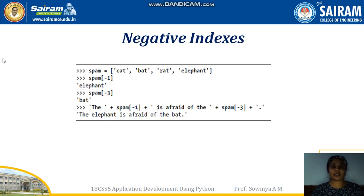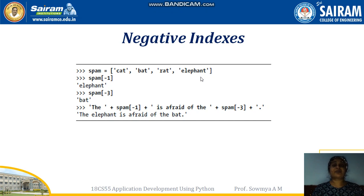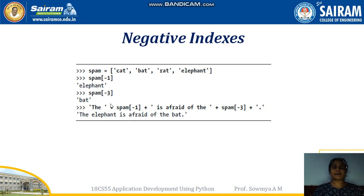Next is negative indexing. With positive indexing, index 0 is 'cat', 1 is 'bat', 2 is 'rat', and 3 is 'elephant'. With negative indexing, -1 is 'elephant', -2 is 'rat', -3 is 'bat', and -4 is 'cat'. Negative indexing in a list is valid and fetches values from the back of the list moving right to left.